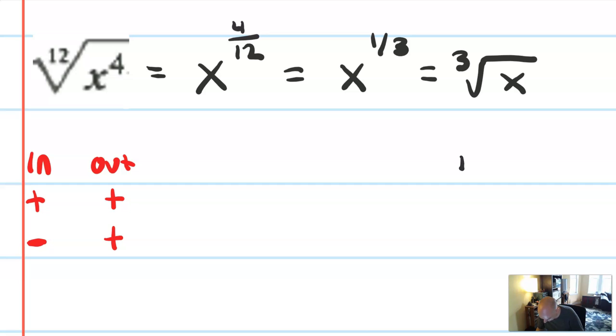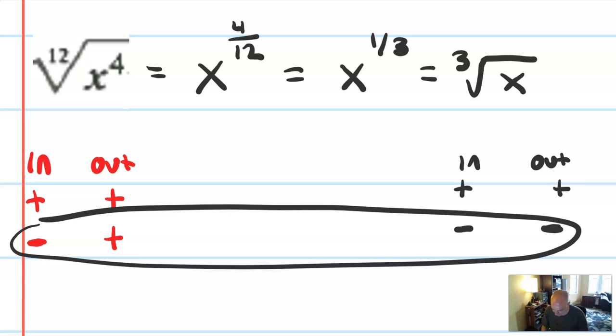But cube root, if I input a positive, I'll get a positive. But if I input a negative, the cube root of a negative is a negative. So again, I have this discrepancy between the values.